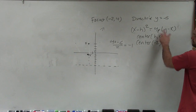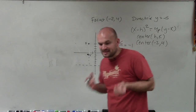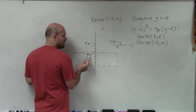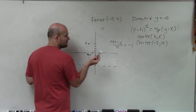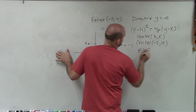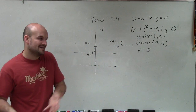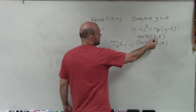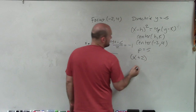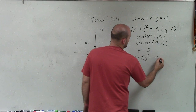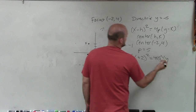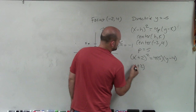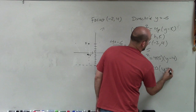The last piece of information we need is p — the distance from the vertex to the focus. Since my focus is going up, p is going to be positive, and I count 1, 2, 3, 4, 5 units. So p equals 5. Now I simply enter this into the parabola equation: x minus h squared — h is negative 2, so it becomes x plus 2 squared — equals 4 times p, which is 5, times y minus k, where k is negative 1, giving y minus negative 1, or y plus 1. Wait — k is the y-vertex value. Simplifying: x plus 2 squared equals 20 times y minus 4.